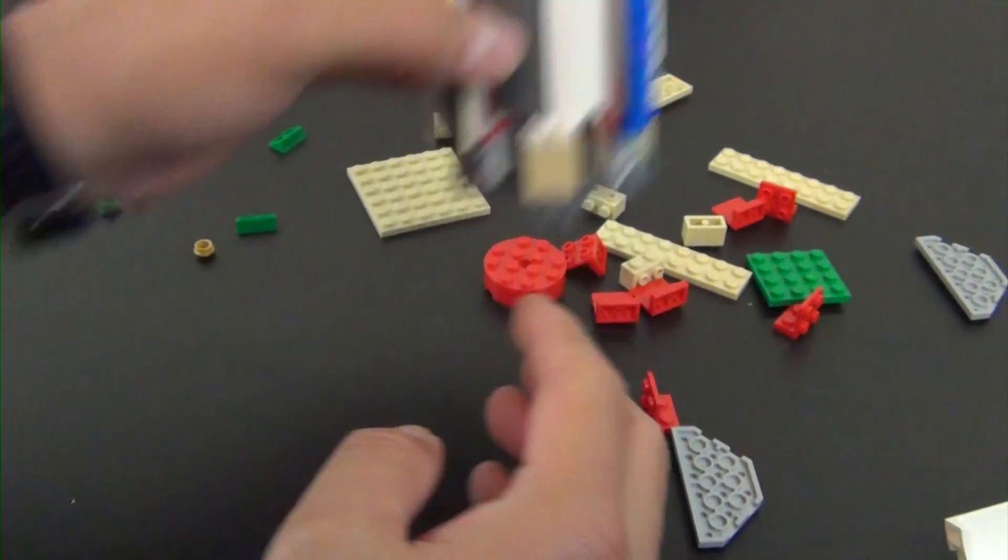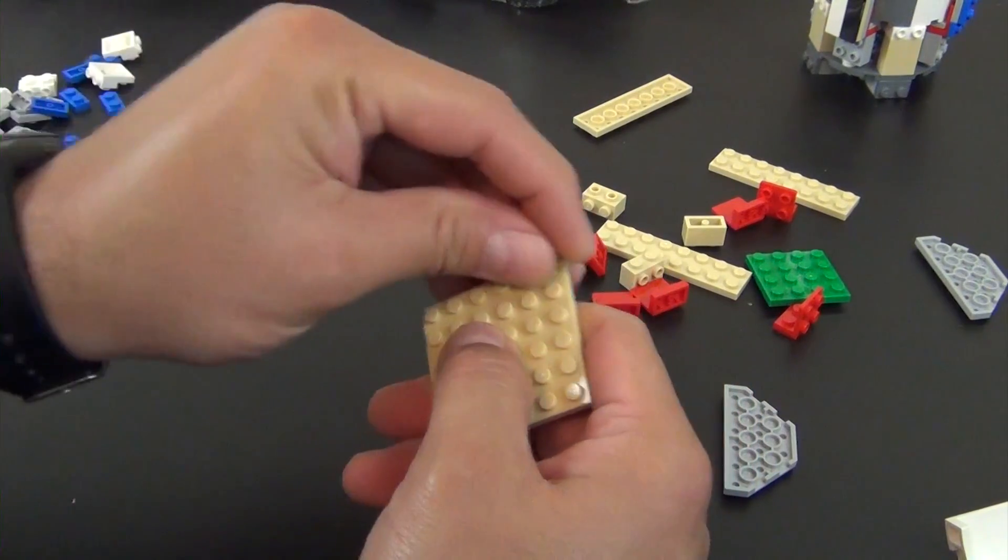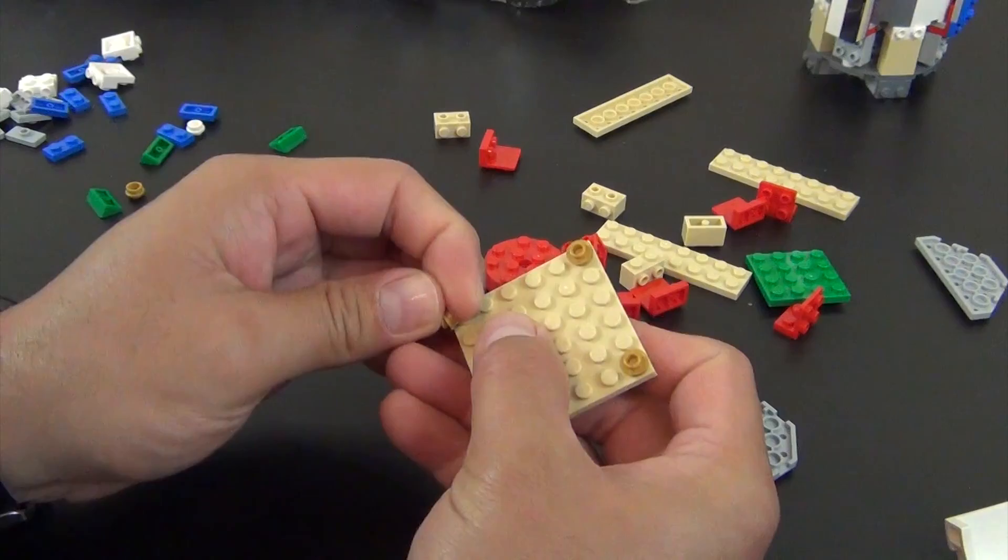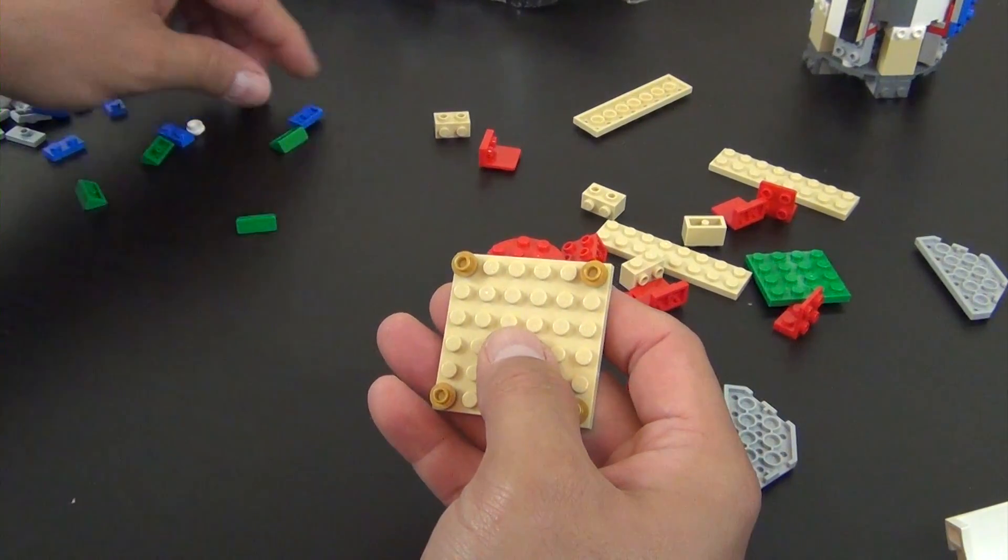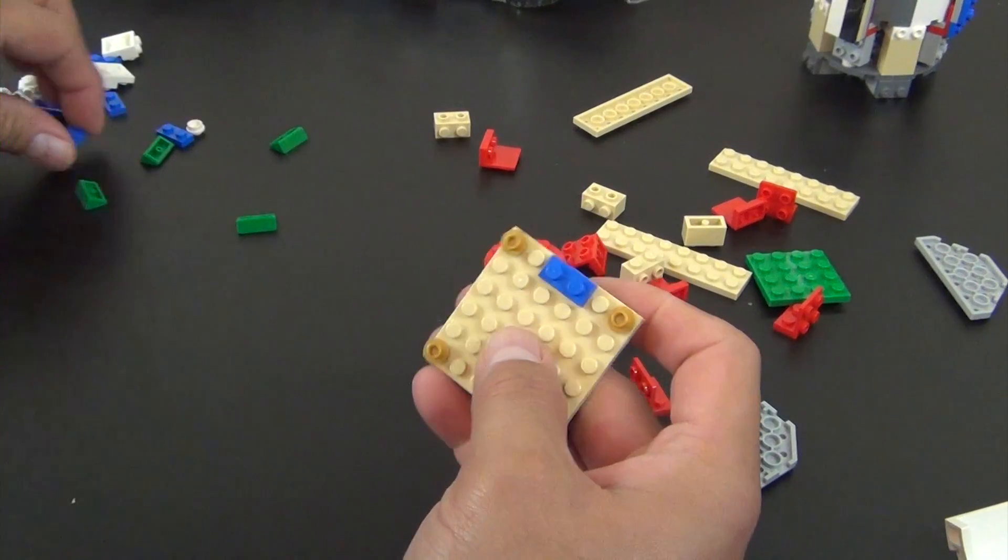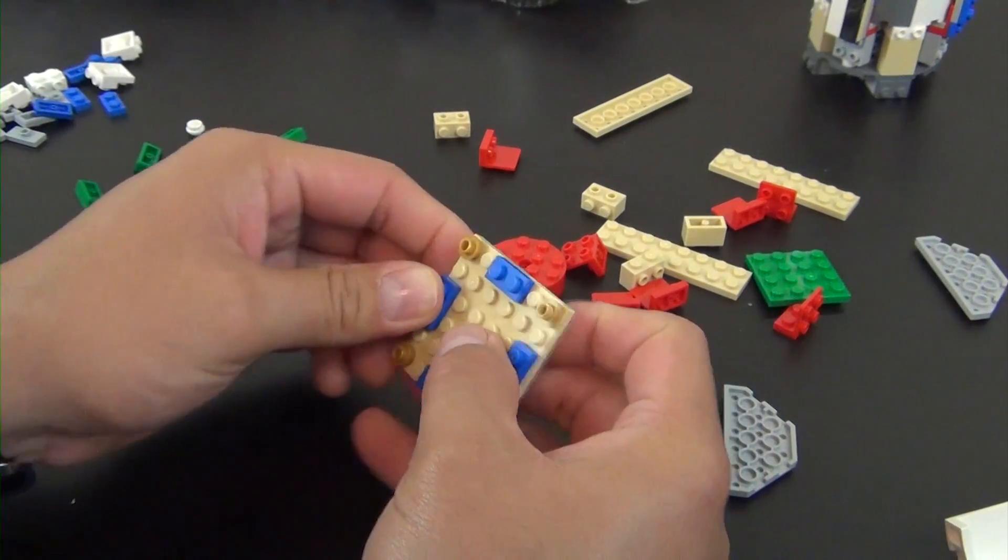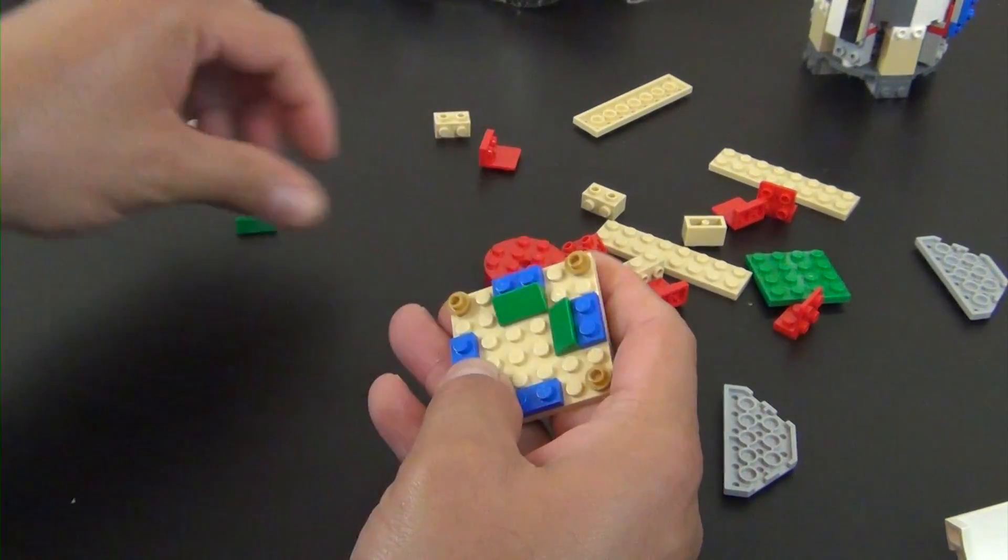So kind of done with this for now, it shows it put off to the side and we're going to begin another little section. So let's begin that now. This is going to start with this six by six plate, attach various plates, some green cheese slopes, and we have our little modified plates with the studs on the side.